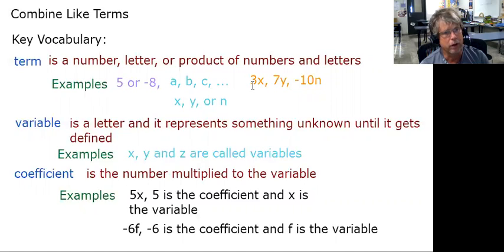You can also have like a product of a number and a letter, so like 3X or 7Y or negative 10N. When you put a number next to a letter, that's considered a multiplication or a product, so those are all considered terms as well. So a term could just be a number, a term could be just a letter, or a product of a number and a letter.